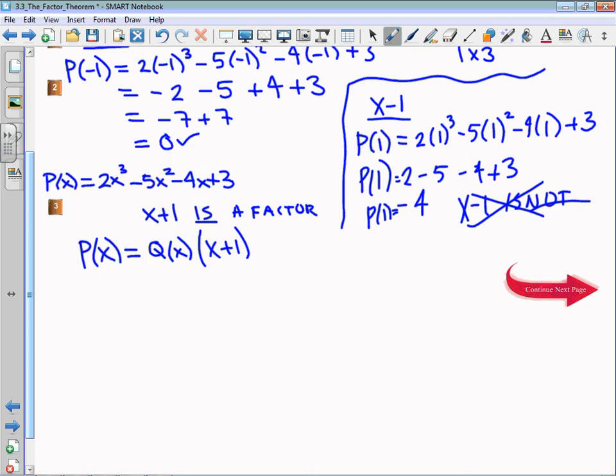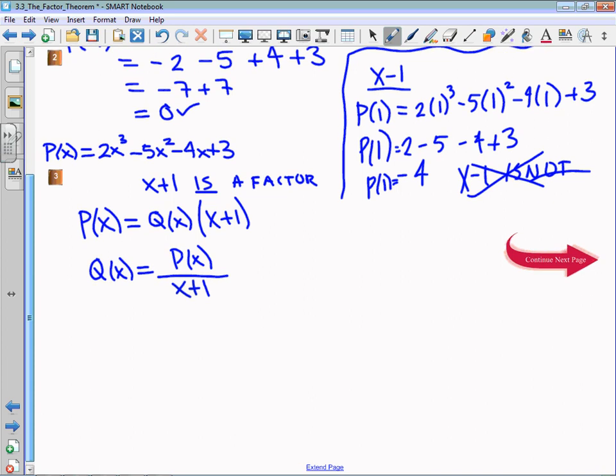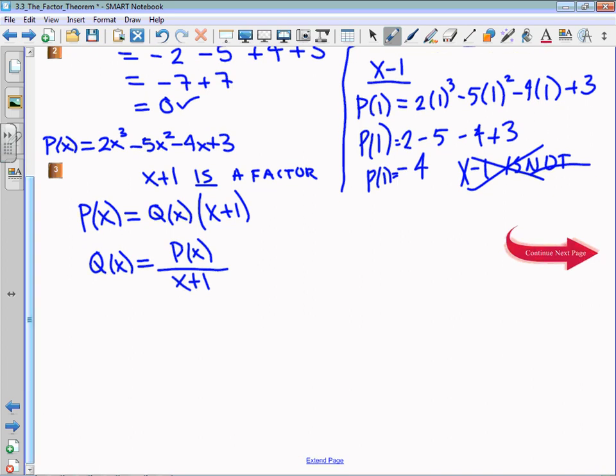To find Q(x), then, I'm going to take my polynomial and divide it by x + 1. Now, I am going to do long division here. You could certainly do synthetic division, but I do like to push long division, at least initially, until we get more comfortable with it. So I'm going to put my polynomial in descending order of degree, which is how it's written. Then I'm going to divide it by x + 1. And the result of this division, I'll just put up here, is going to be Q(x).